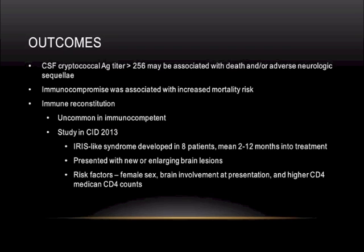Some association with poor outcomes has been seen in patients with a CSF antigen titer greater than 256. Immunocompromised hosts are at increased mortality risk. There is a small risk of immune reconstitution even in the immunocompetent patient. A 2013 study in CID reported IRIS-like syndromes in eight patients, a mean of 2 to 12 months into treatment, usually presenting as new or enlarging brain lesions. Female sex, brain involvement at presentation, and higher CD4 counts were associated in those cases.